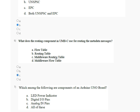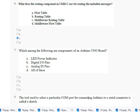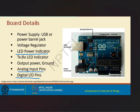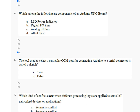Question number 7: which among the following are components of an Arduino Uno board — LED power indicator, digital input/output pin, analog input pin, all of the above? The board details include LED power indicator, analog input pin, and digital input/output pin. So the correct answer for question number 7 is option number D — all of the above.